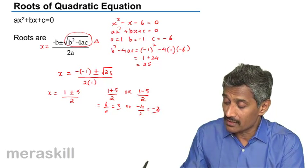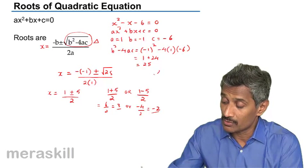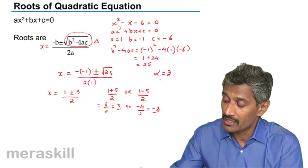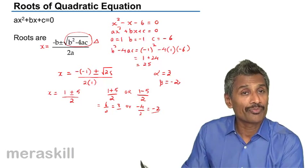The roots in this case are 3 and -2. In other words, α = 3 and β = -2.